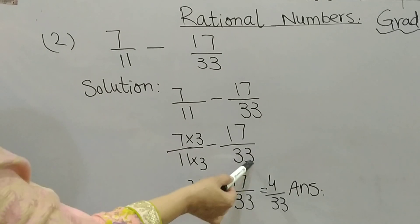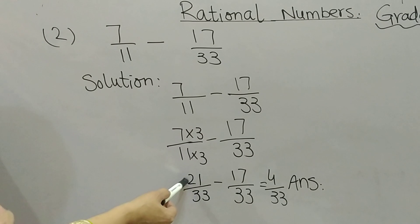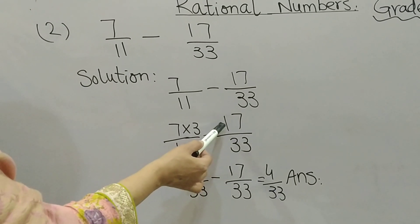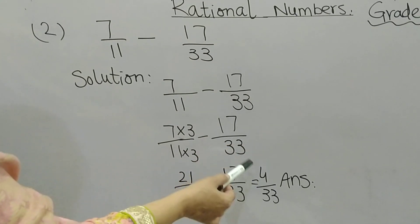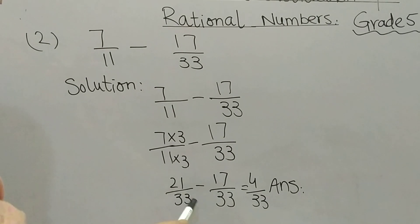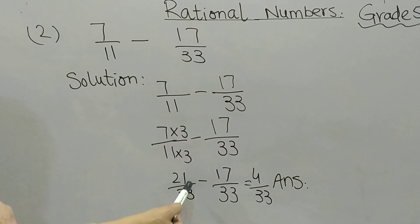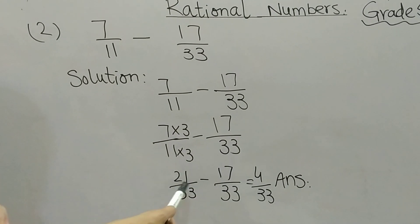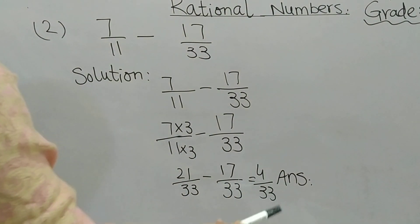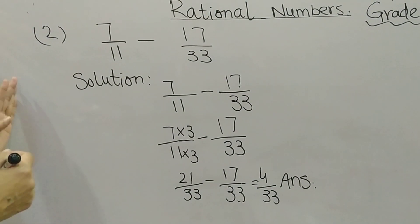Multiplying 7 by 3 gives 21, and 11 by 3 gives 33. So the first fraction becomes 21 by 33. The second fraction 17 by 33 stays the same because the denominator is already 33. Now the denominators are the same, so I subtract: 21 minus 17 gives 4. The answer is 4 by 33.